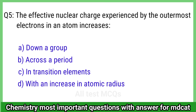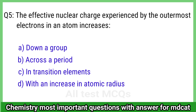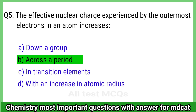Question 5: The effective nuclear charge experienced by the outermost electrons in an atom increases? The right answer is option B, across a period.